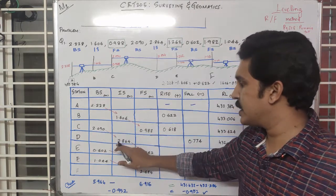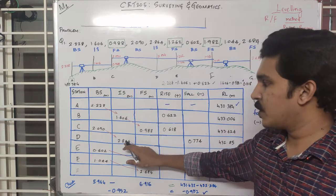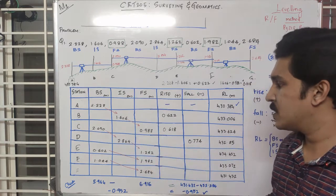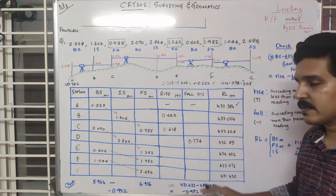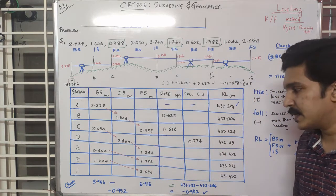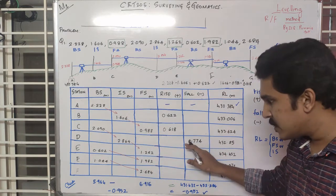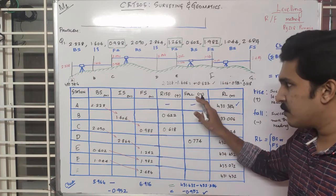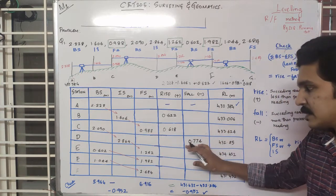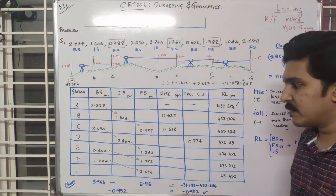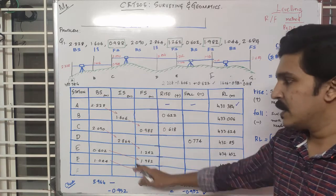The next value is 3.090. That is the result, and this value is negative, so it becomes a fall.